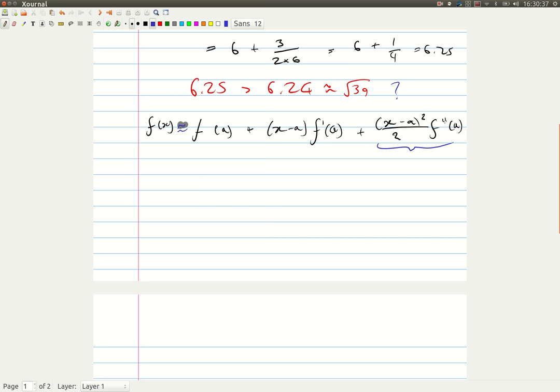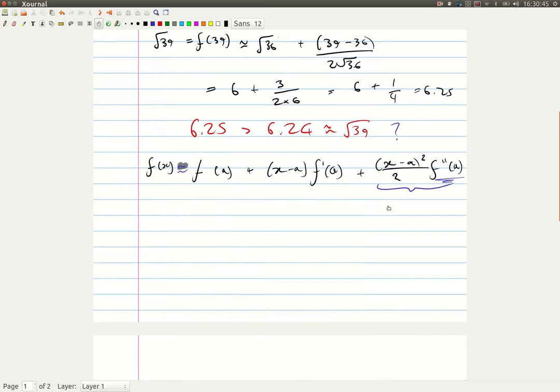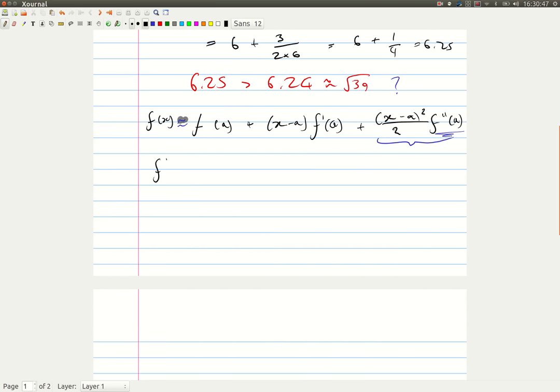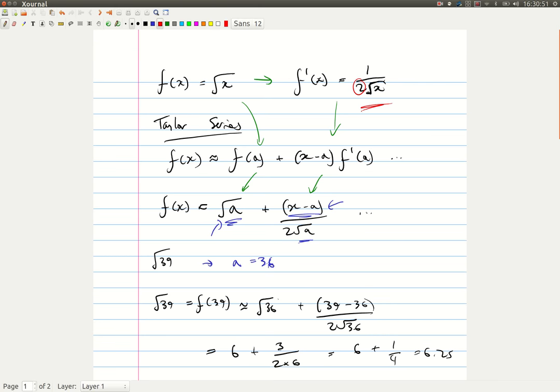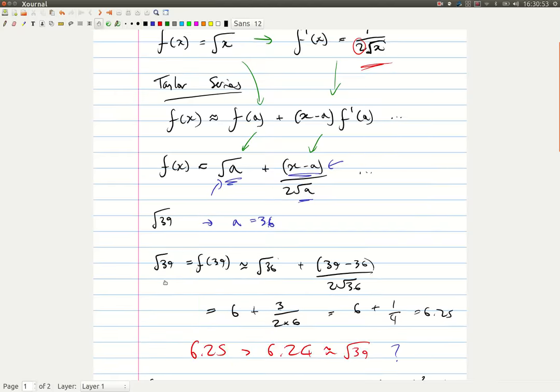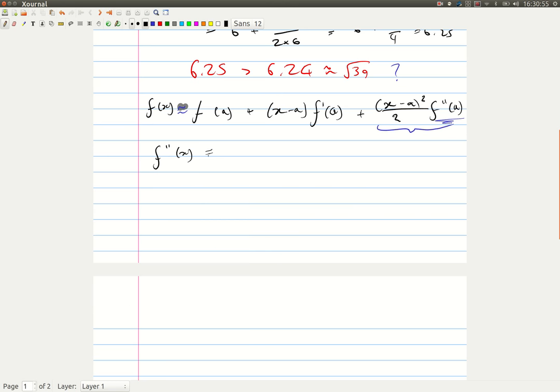And the only thing that we don't know from this term yet is obviously a, which will vary depending on what we need to calculate, and f dash dash of x, or f dash dash of a. So all we need to do is take the derivative of this again. And that will equal minus 1 over 2, over 4, x to the 3 over 2.